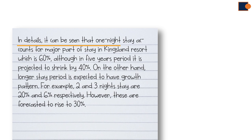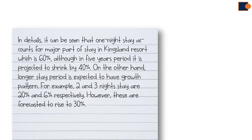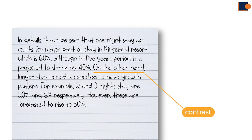It starts with the phrase 'it can be seen that' — this phrase is useful to start any graph essay; it is a starter phrase. Then it states a comparison of a major part of stay, which is supported by data: 60%. Then a second comparison uses the second chart — in the future period — again giving supporting data of 40% and mentioning the time period.